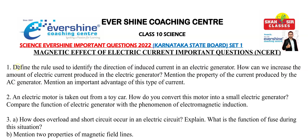I will just explain you briefly here. The first question is: define the rule used to identify the direction of induced current in an electric generator. In an electric generator, to identify the direction of induced current, which rule are you going to use? You just have to name the rule.